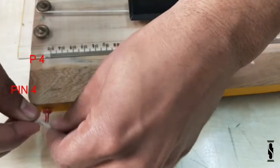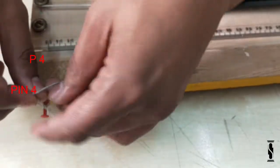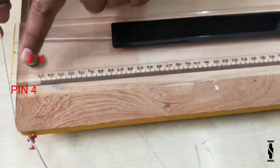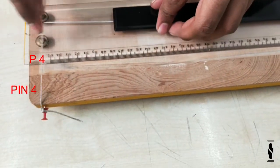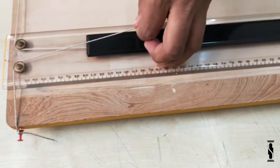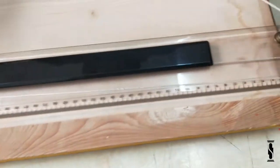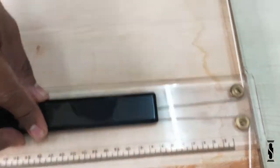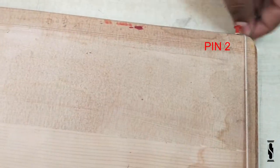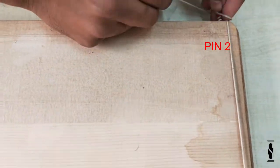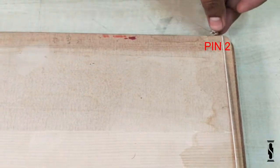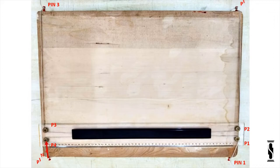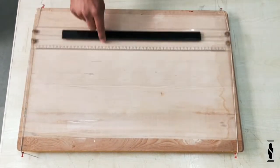Now, tie another string on pin 4 and take the string around the pulley P4. Do not tie the strings too tight or too loose to move the motion parallel bar smoothly.